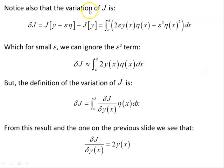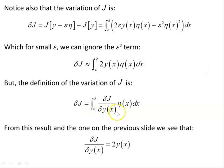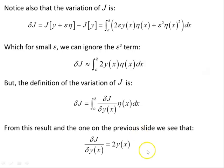Also notice, coming from a slightly different direction, that the variation δJ is J[y + ε·η] minus J[y], which is the object we already found. For small ε, we can ignore the ε² term since ε² is very much smaller than ε. So δJ becomes approximately the first-order term. Now, by definition the variation of J is δJ = ∫(δJ/δy(x))·δy(x)·dx, and from this result and the one on the previous slide, the functional derivative must be 2y(x). This confirms our result.